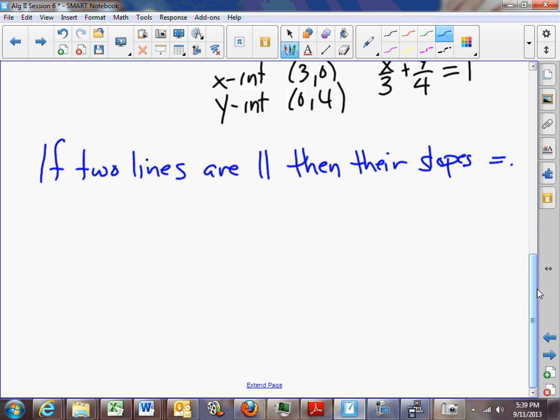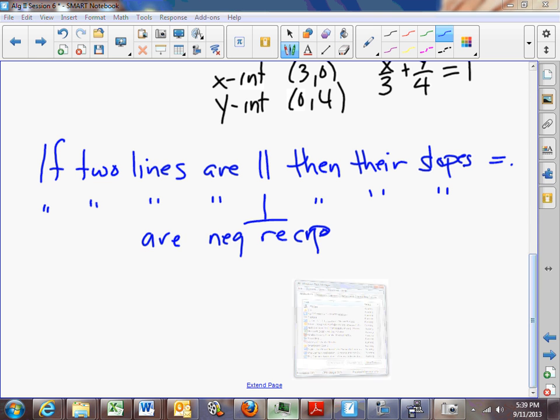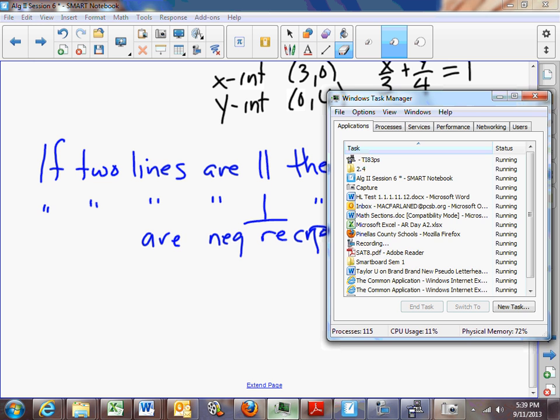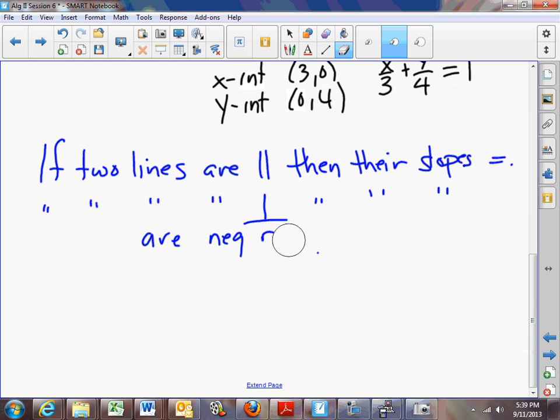Now, the second part may not be quite so obvious, but it is important to know this. If two lines are perpendicular, then their slopes are negative reciprocals of each other.